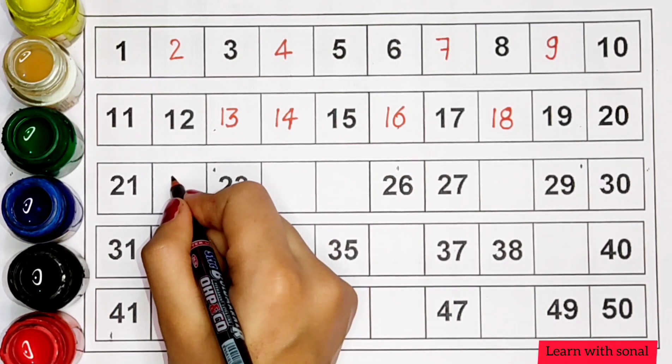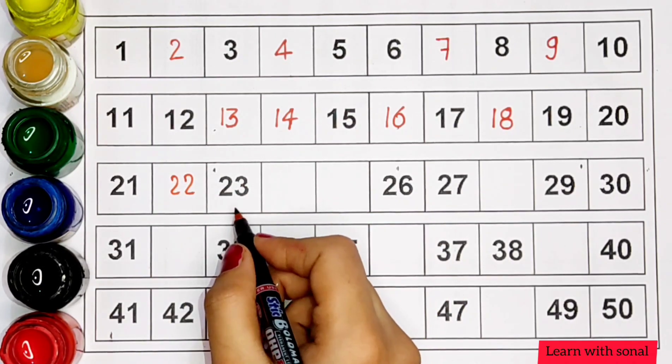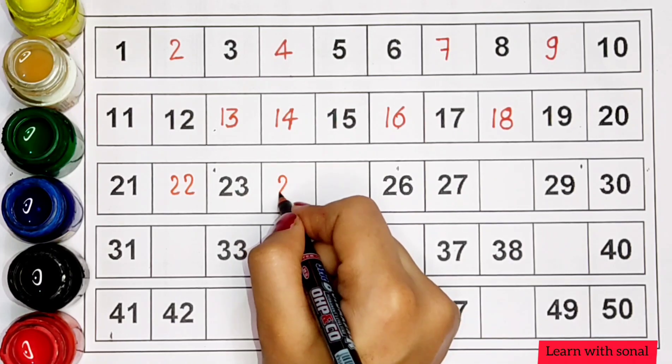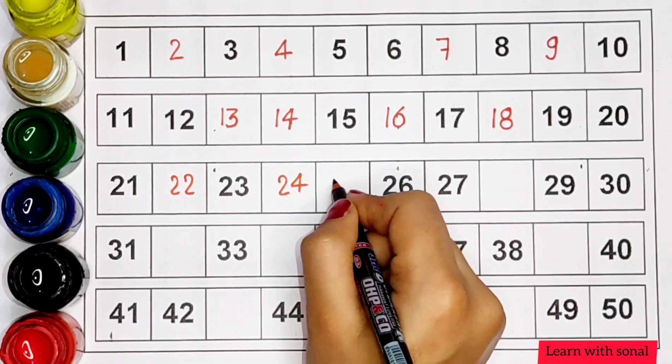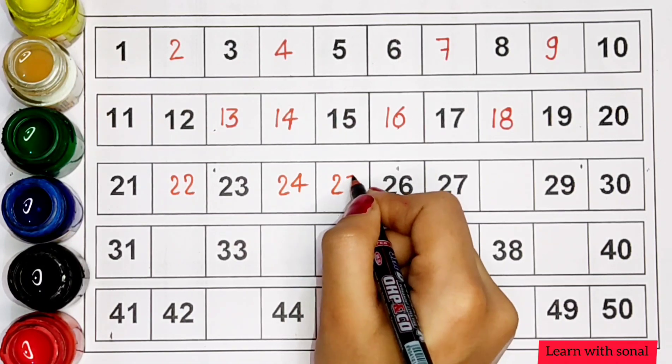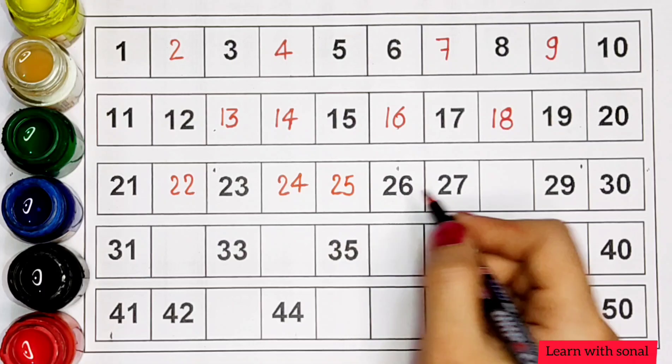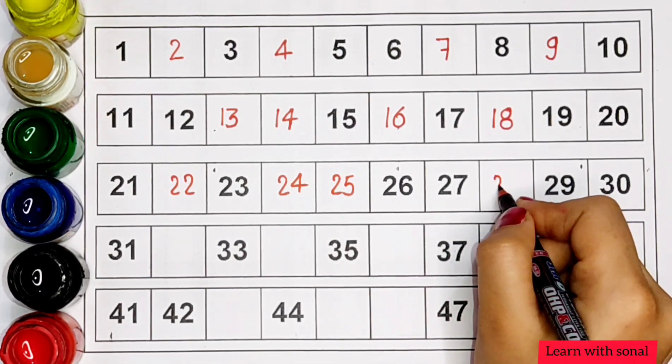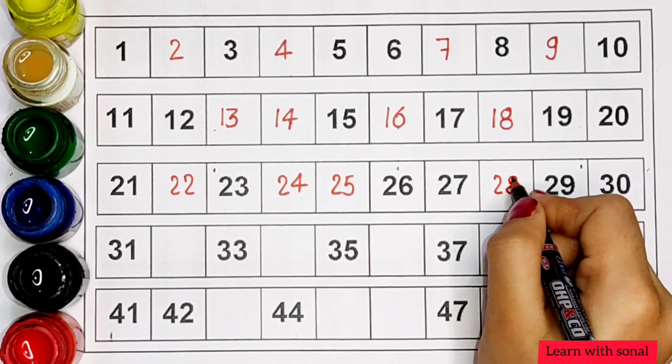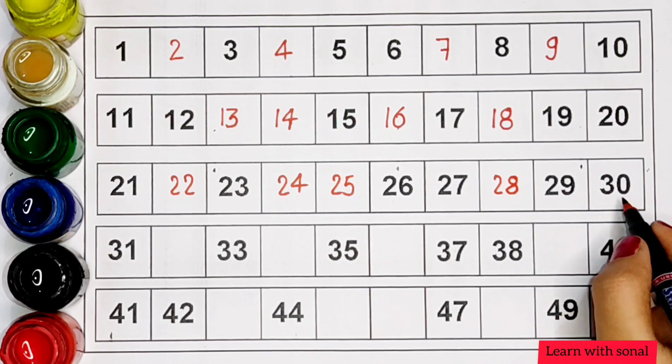Twenty-two, twenty-three, twenty-four, twenty-five, twenty-six, twenty-seven, twenty-eight, twenty-nine, thirty.